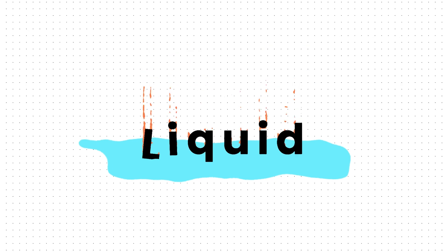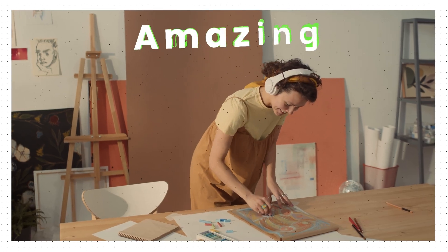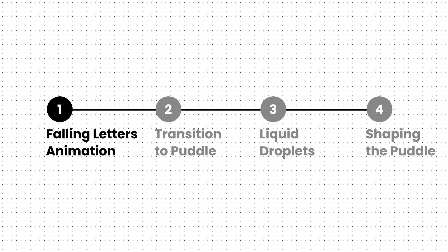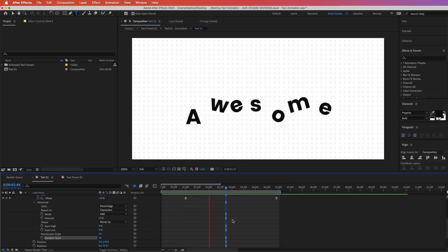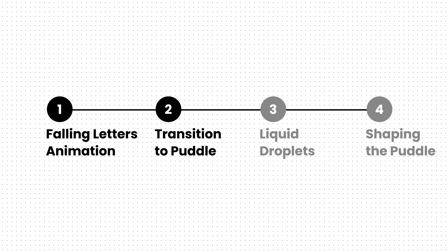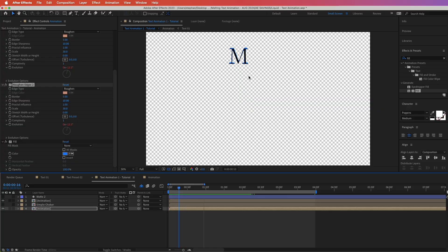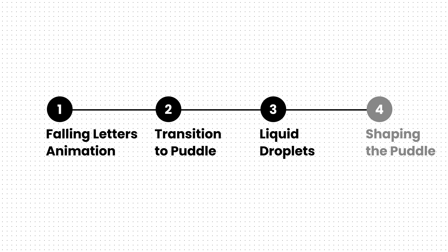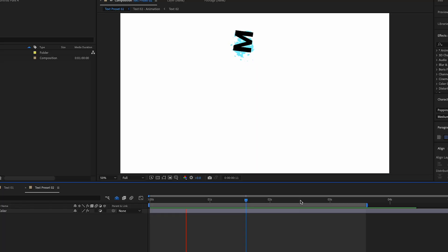In today's video you are going to learn how to take a simple text animation and change it into a cool liquid melting animation. The cool thing about this is that it is completely procedural, so you can change the text element and the animation will update automatically. We will do this in four main steps: first we will create a falling letters animation, then we will create a transition to melt the text into a puddle, we will create liquid droplets, and finally we will animate and shape the puddle to bring this all together.